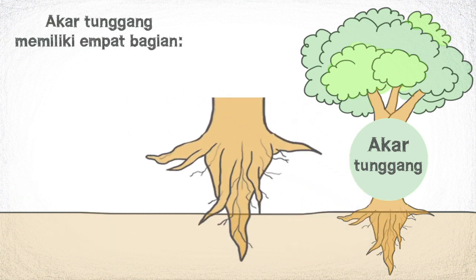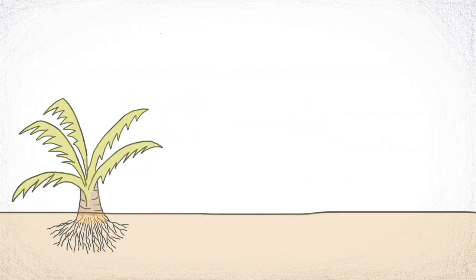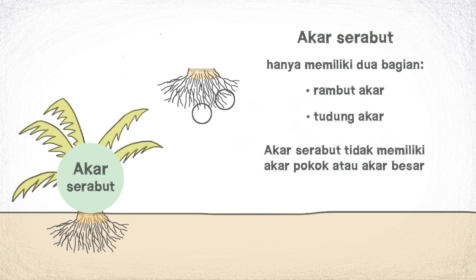Akar tunggang memiliki empat bagian, yaitu akar pokok atau akar besar, cabang akar, rambut akar, dan tudung akar. Sedangkan akar serabut hanya memiliki dua bagian, yaitu rambut akar dan tudung akar. Akar serabut tidak memiliki akar pokok atau akar besar, karenanya hampir semua bagian akar serabut berukuran sama.